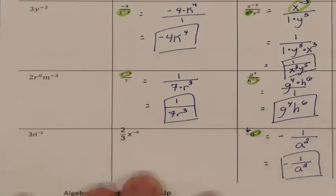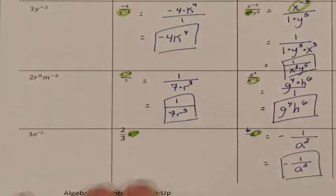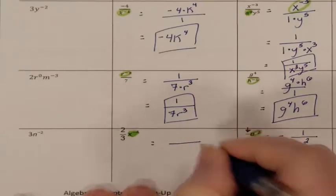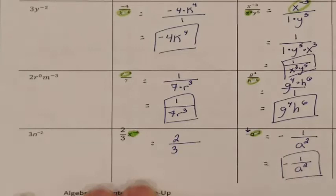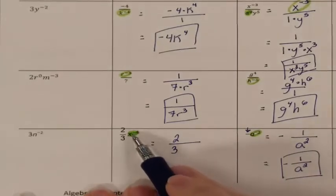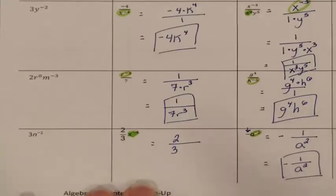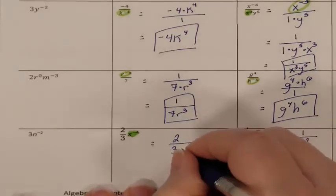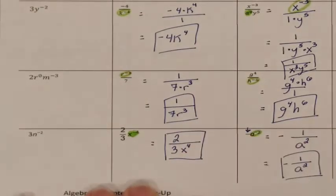Next problem. X is the only thing that has the negative exponent, so X is the only thing that's going to move. Here is my fraction bar — there was a 2 in the numerator and a 3 in the denominator. This X is in the numerator; if it were in the denominator, it would have been connected to the 3. Since the exponent is negative, X moves to the denominator and turns to a positive exponent. There is no way to simplify this fraction further, so this is the final answer.